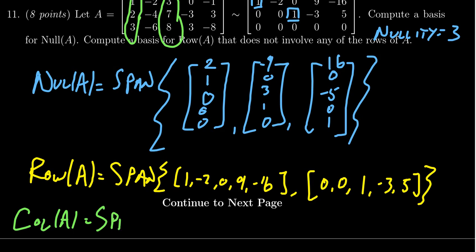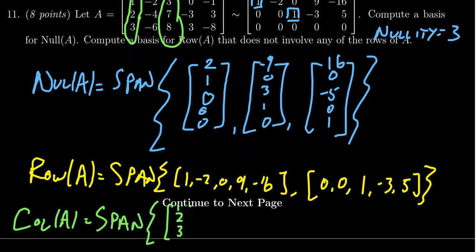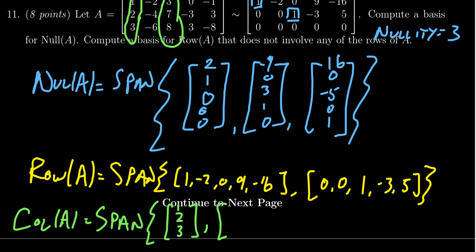So the column space is actually the span of the vectors one, two, three and then the other vector three, seven, eight. This one didn't actually call for the column space basis but a variant of this question does ask for the column space so I just want to show you how would you compute a basis for the column space if it were asked of us.